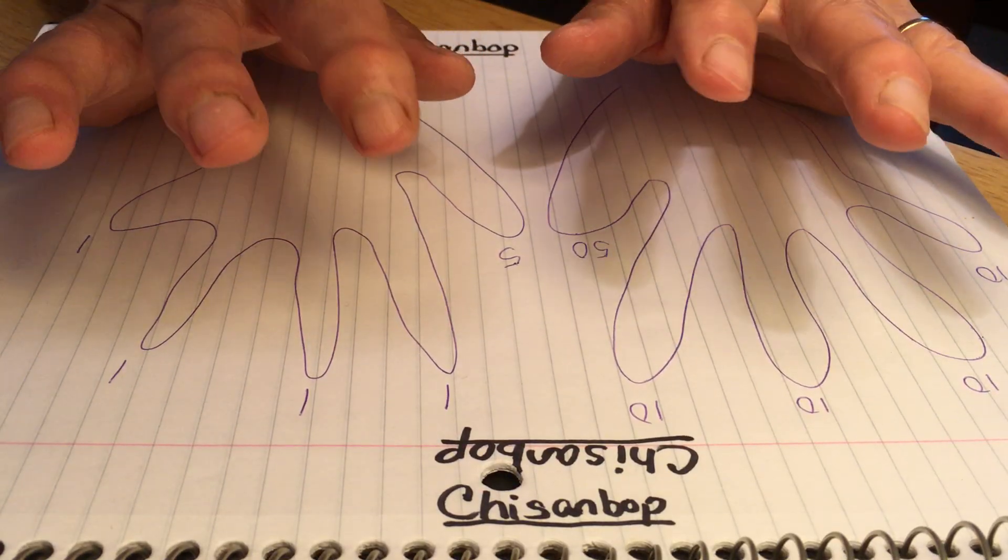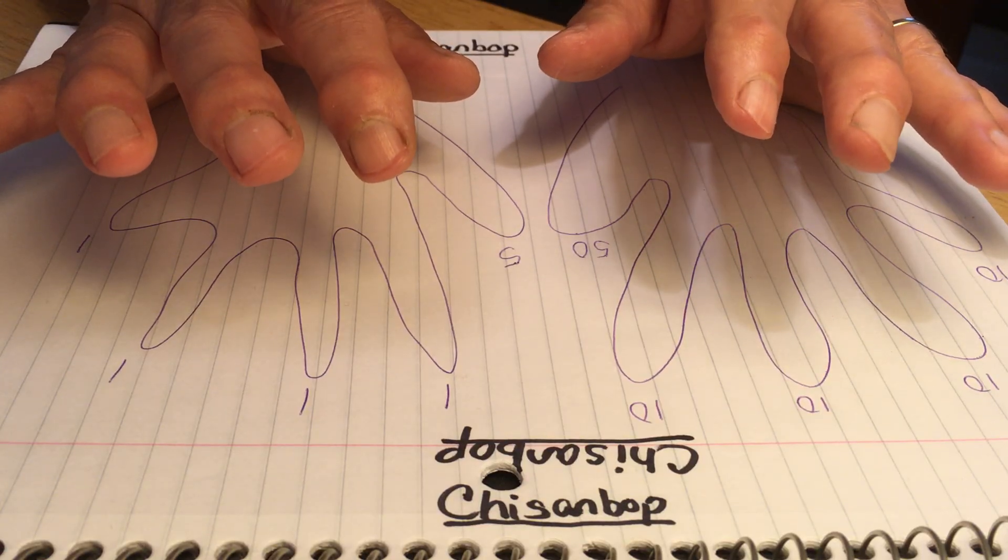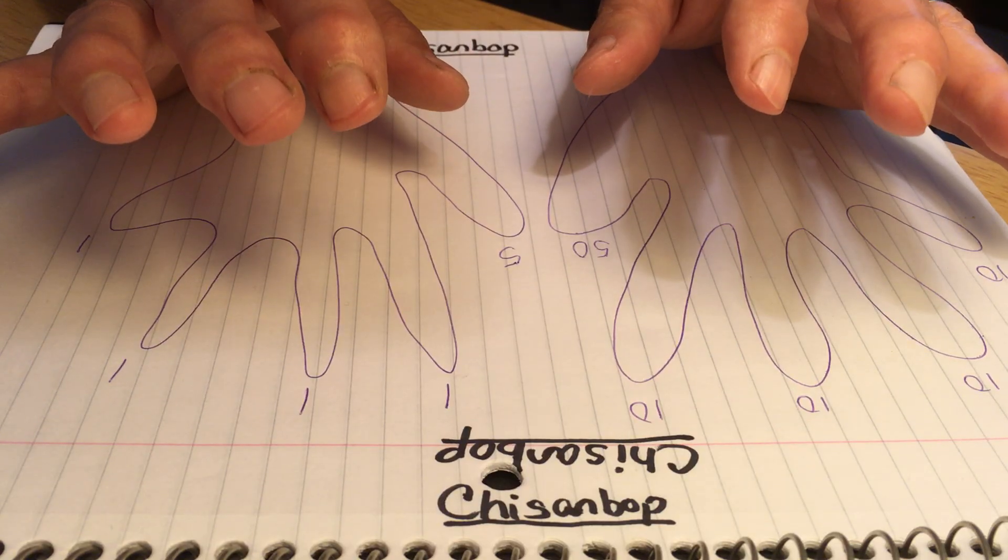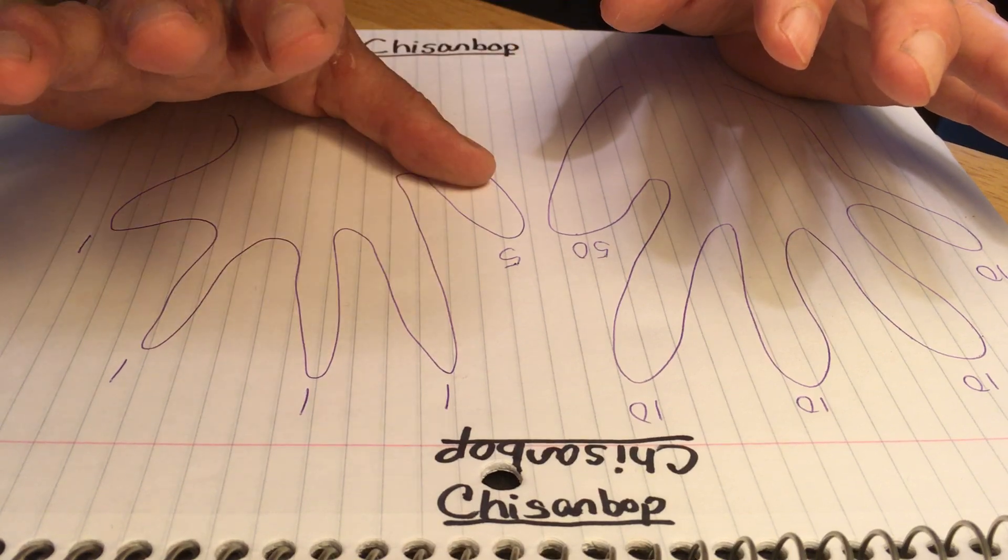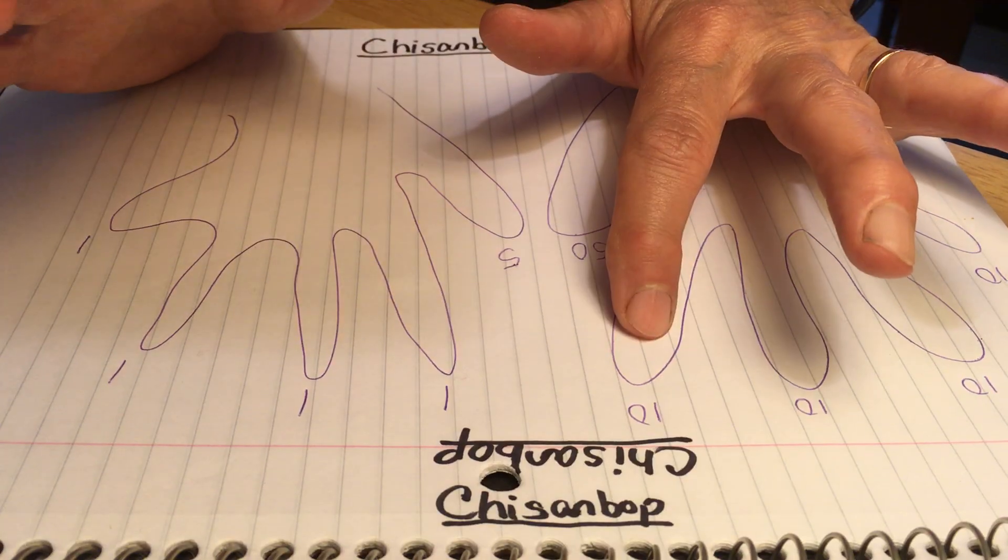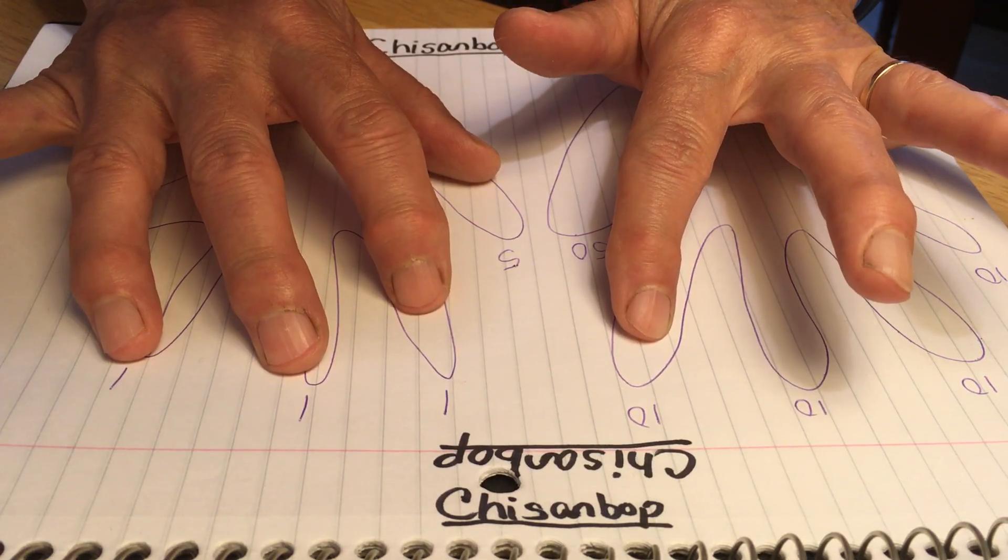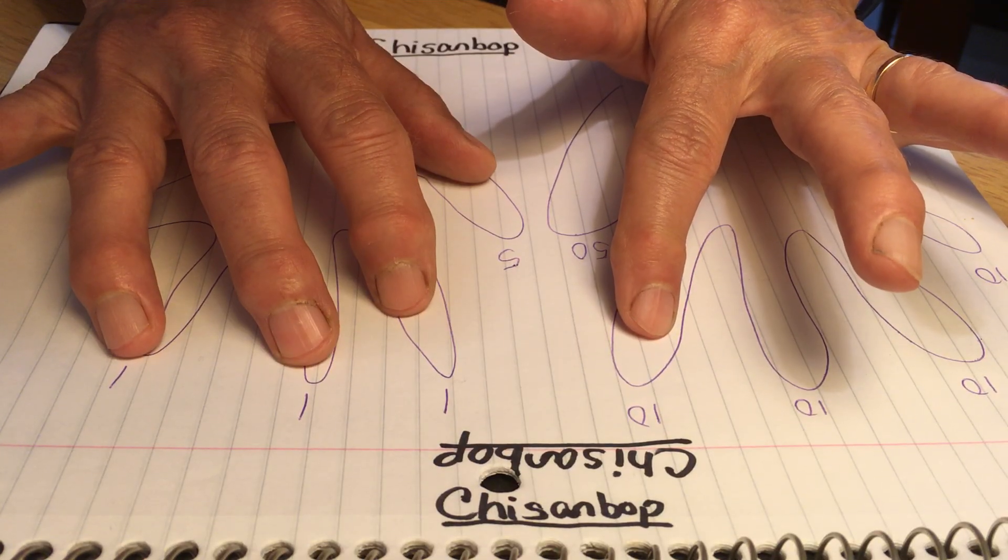Then try adding a few digits. At first you can just count the digits. So 5 plus 4 plus 9: 1, 2, 3, 4, 5, plus 4, 1, 2, 3, 4, plus 9, 1, 2, 3, 4, 5, 6, 7, 8, 9. The total is 10 and 8, which is 18.